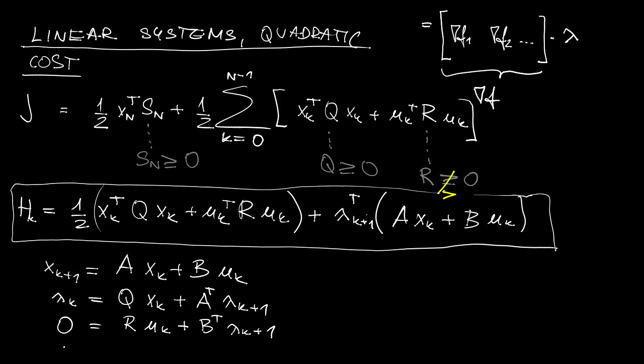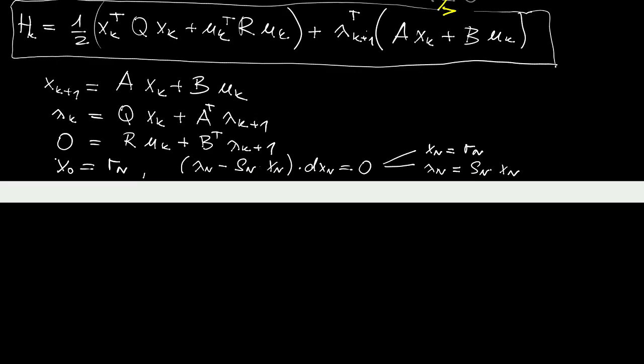And then, the initial condition is, well, again, a typo here. It should be R0. And the final condition is then given in one of these two formats. Either the state at the final time is given or the costate, lambda at the final time, is given as a linear transformation of the state at the final time.